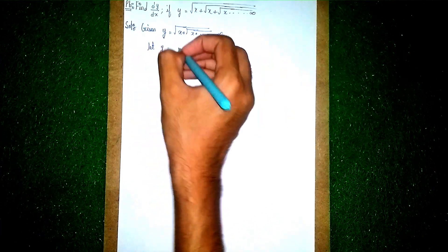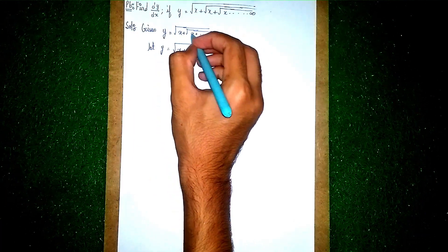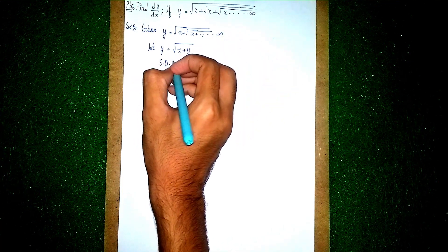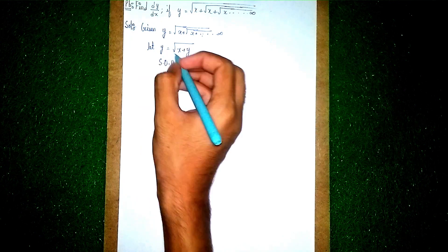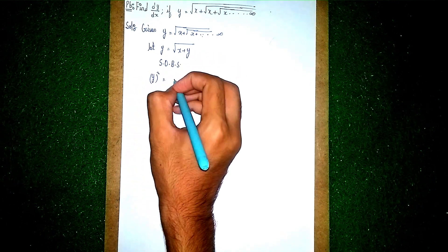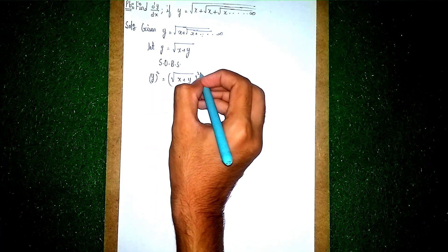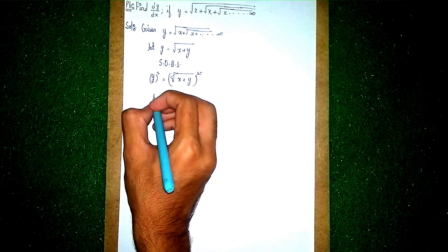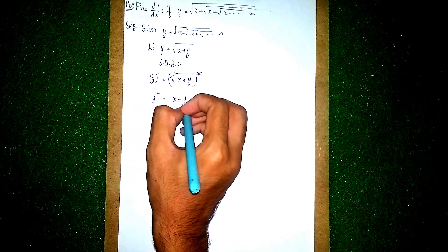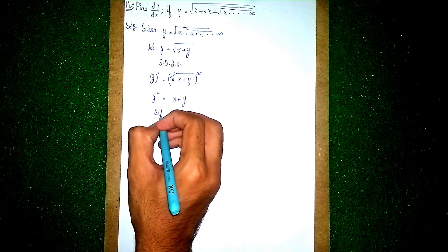Let y be equal to the square root of x plus y. We consider the infinite nested part as y itself. Now squaring on both sides: y squared equals the square root of x plus y, whole squared. The square and root cancel, so it becomes y squared is equal to x plus y.